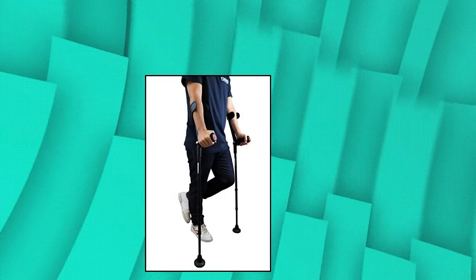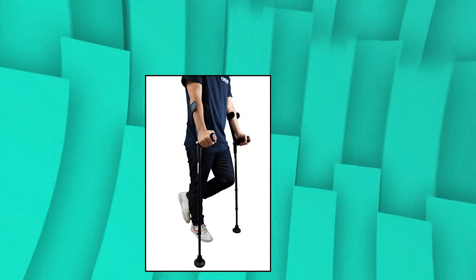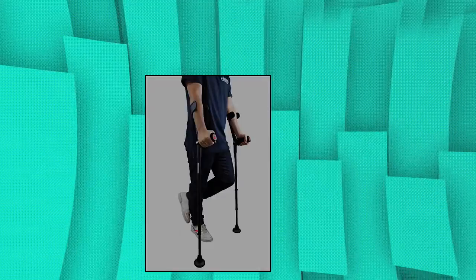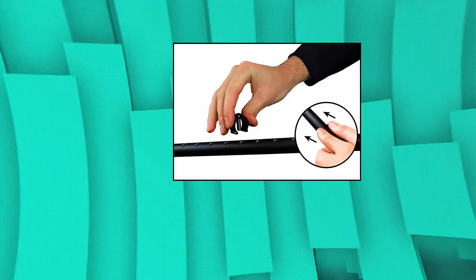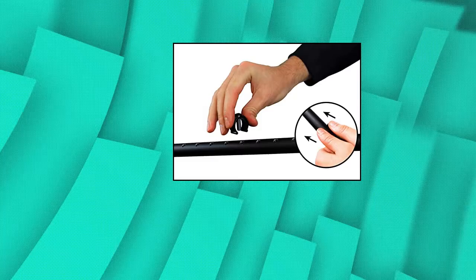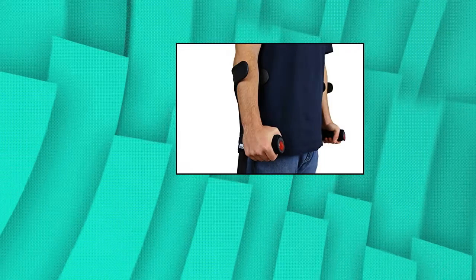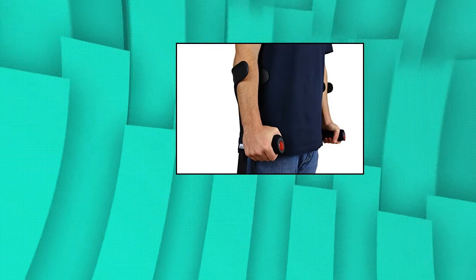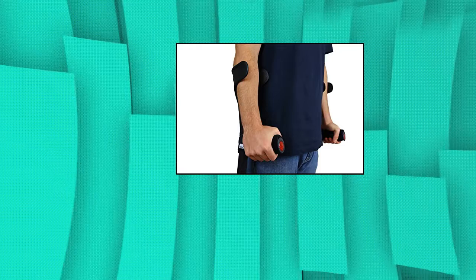The sturdy aluminum cane improves and increases the stability of users when walking. Adult crutches with comfortable and hygienic hand supports that reduce pain in hands and wrists. Washable and interchangeable padding. These lightweight aluminum crutches are recommended for use in periods of convalescence and injury rehabilitation.